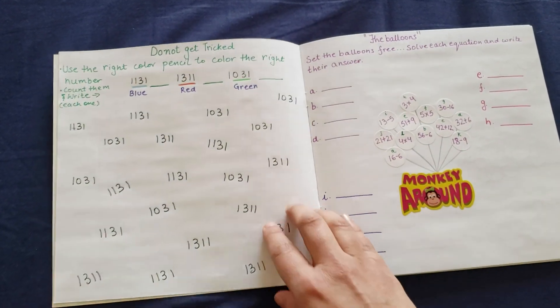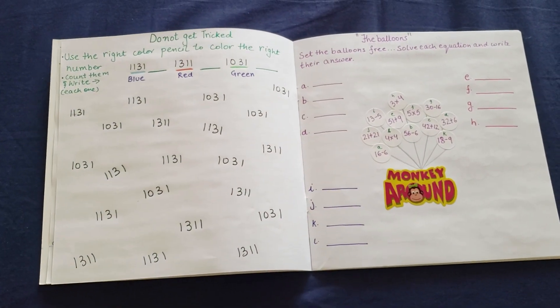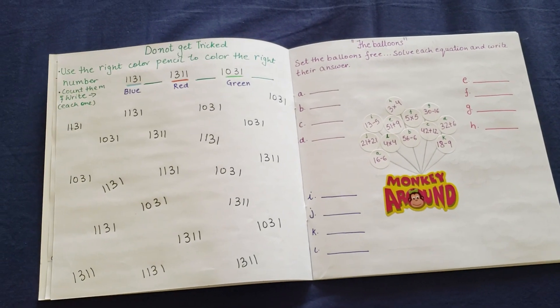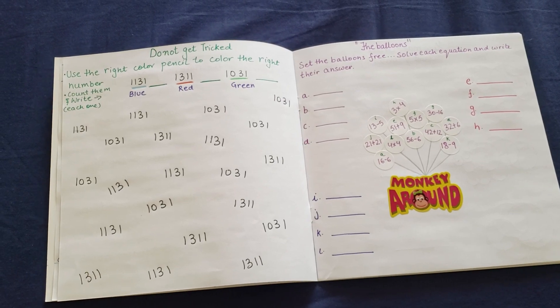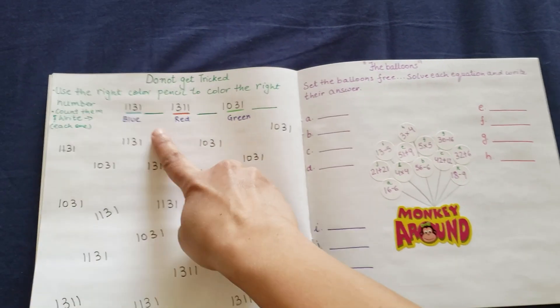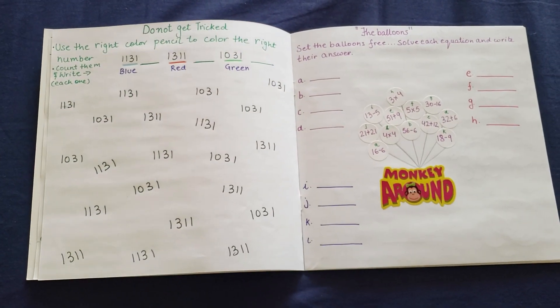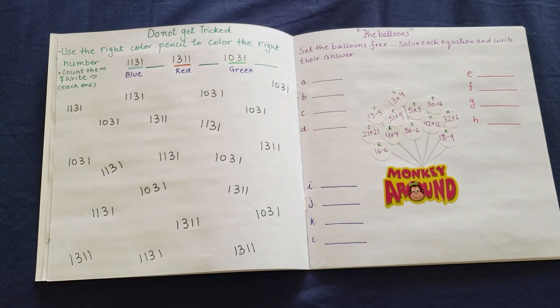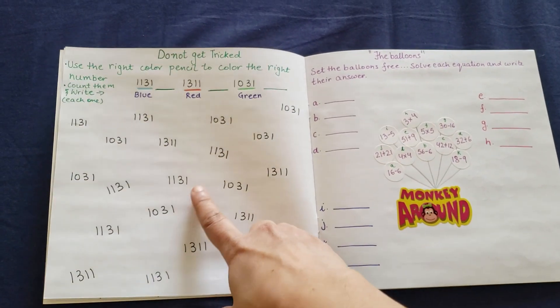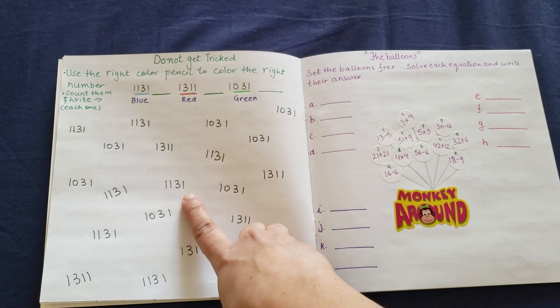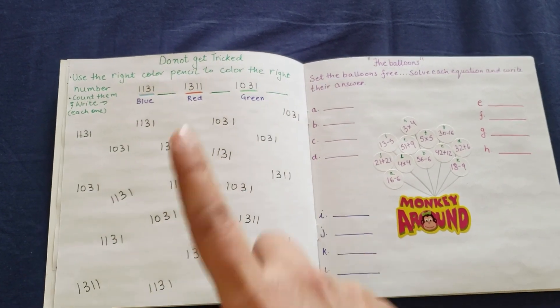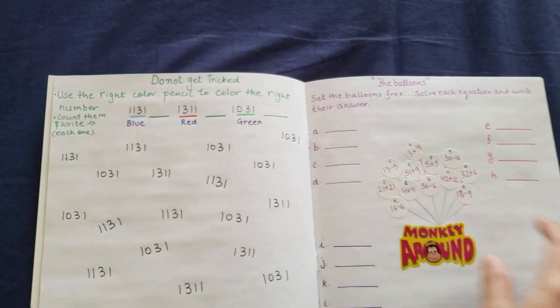Okay, don't get tricked. So that's a great number recognition, counting plus a color activity. So 1131, you need to color them blue. You need to count all of them, especially 1131 and then write them here. Then 1311, you need to color them all red, count them and write them there. So for the green one. So I think it's a pretty tricky activity. Like every time a child has to remember that he needs to color 1131 as blue and then he needs to add all of them or just total up and write it here.